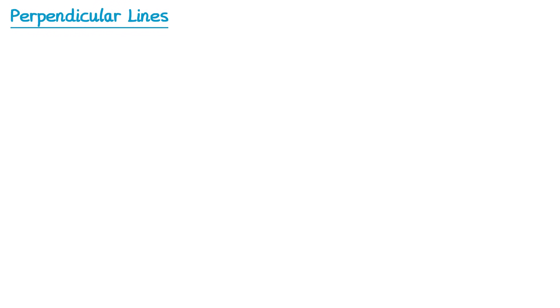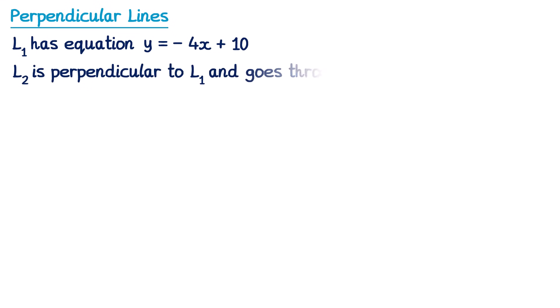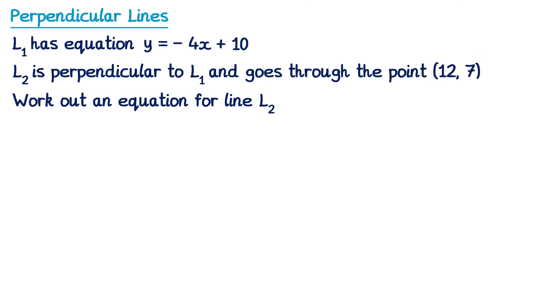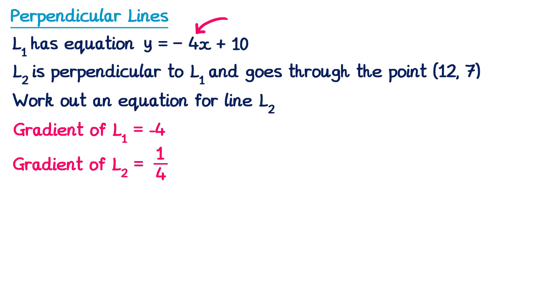A second type of question is where you're given the equation of a first line L1, and told that L2 is a perpendicular line going through a specific point, asking you to work out the equation for L2. The gradient of L1 must be negative 4. Since L2 is perpendicular to L1, we do the negative reciprocal: the gradient of L2 will be positive, and it will be the reciprocal of 4 which is one quarter. So the gradient of L2 is one quarter. We can write the equation in the form y equals mx plus c, replacing m with one quarter: y equals one quarter x plus c.